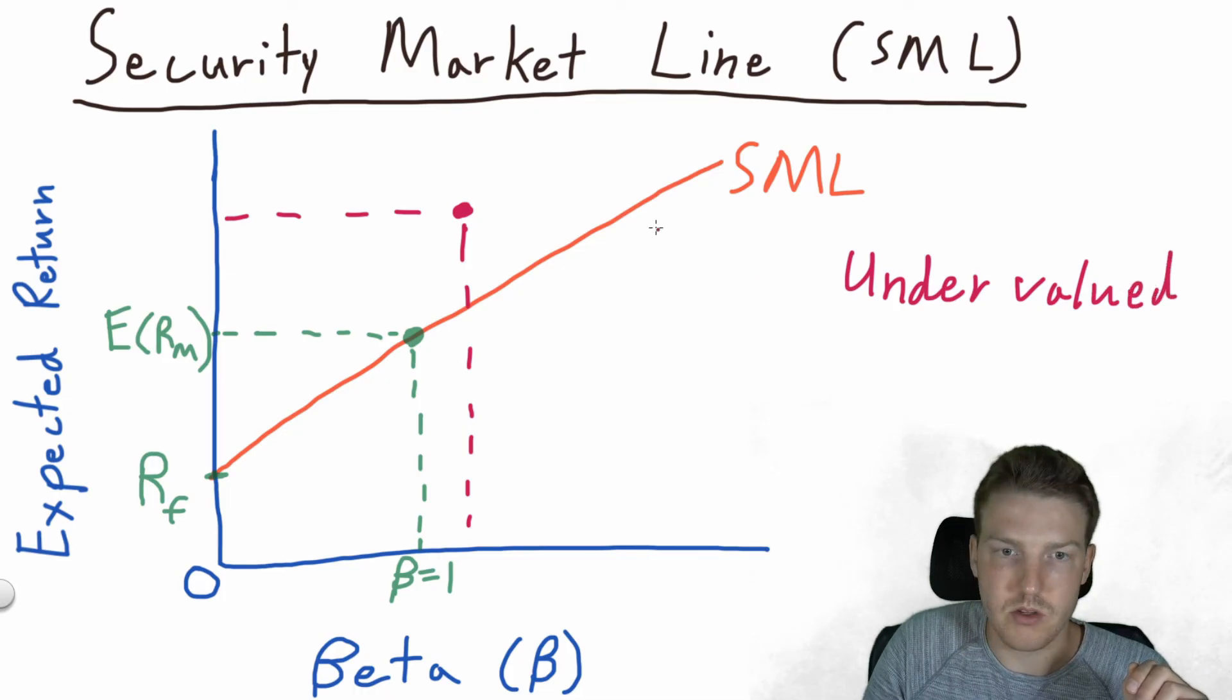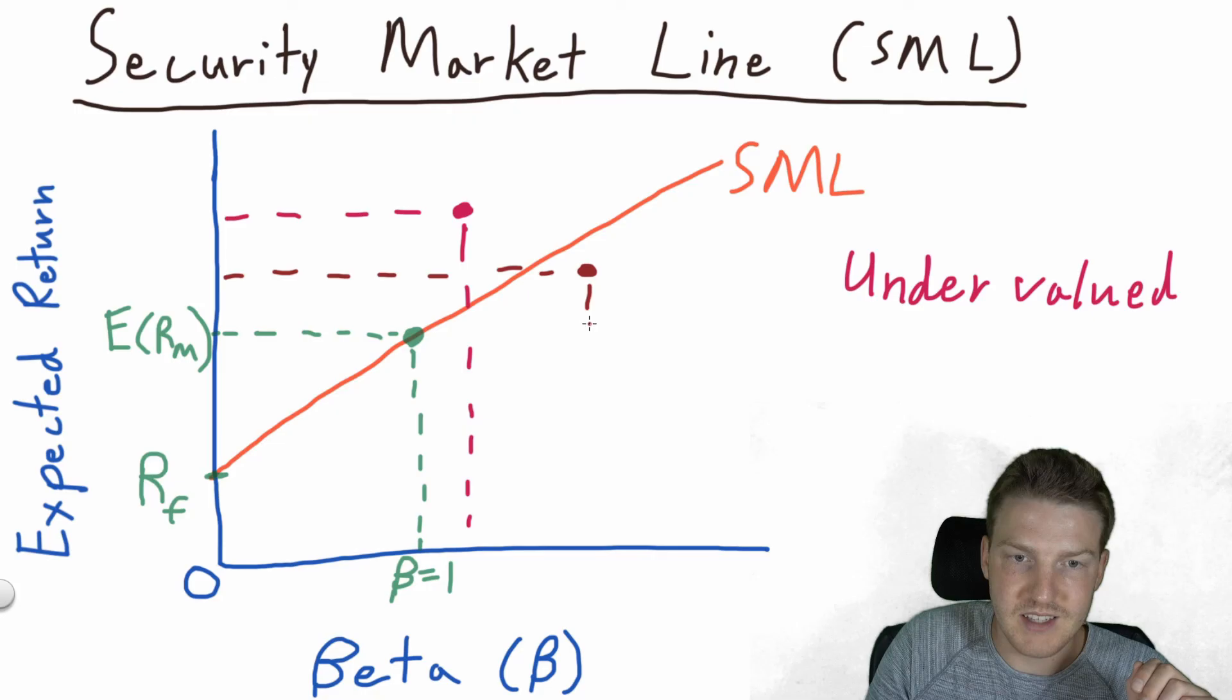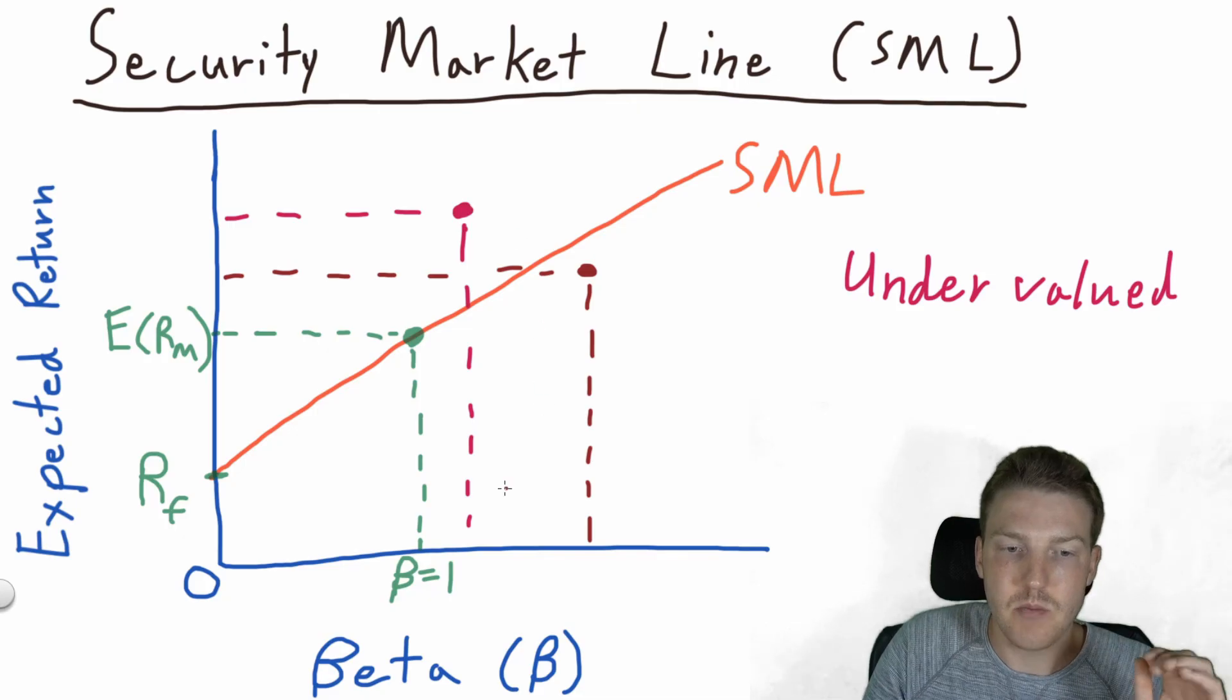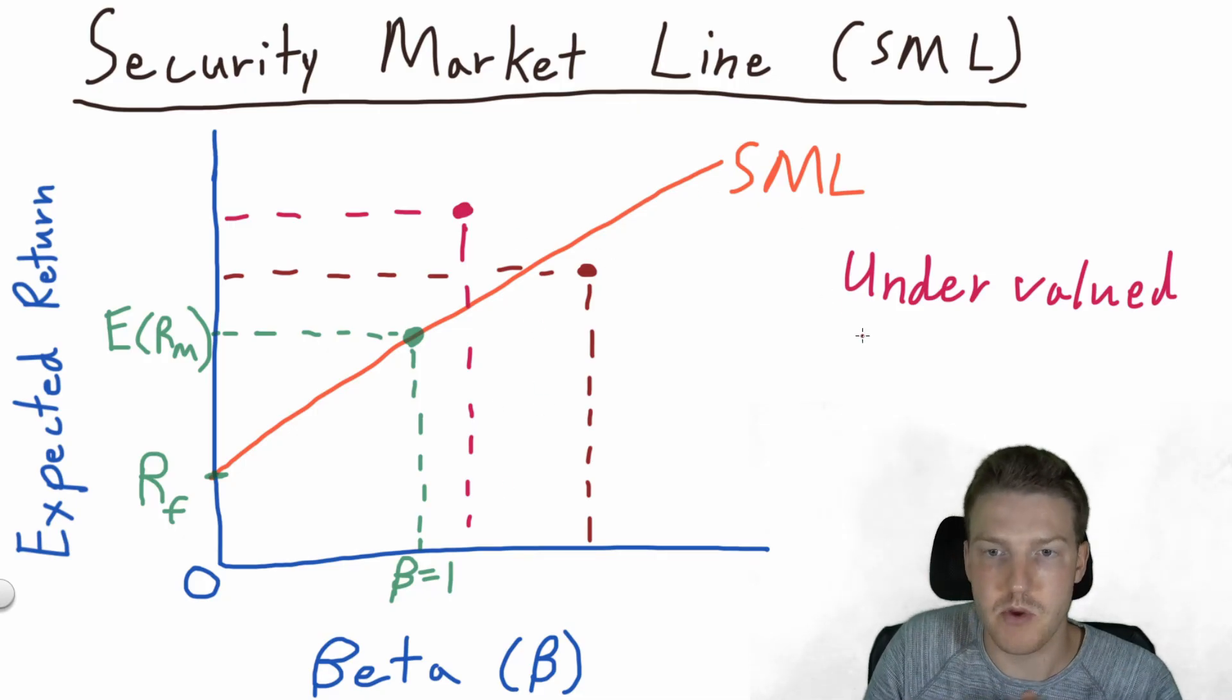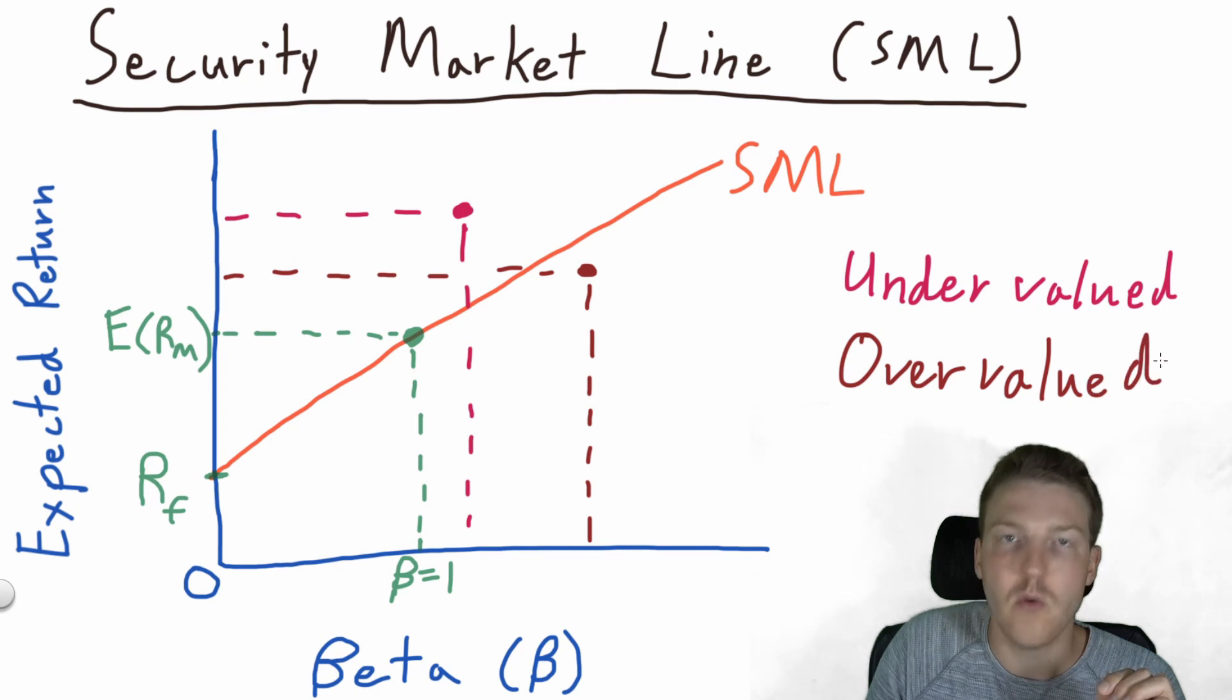But let's look at another hypothetical asset. That this asset returns this much, but it has this much risk. So it returns less than the red asset, but it has more risk than the red asset. So because it's below the security market line, the orange line, we say that that brown dot is overvalued. That asset is overvalued.